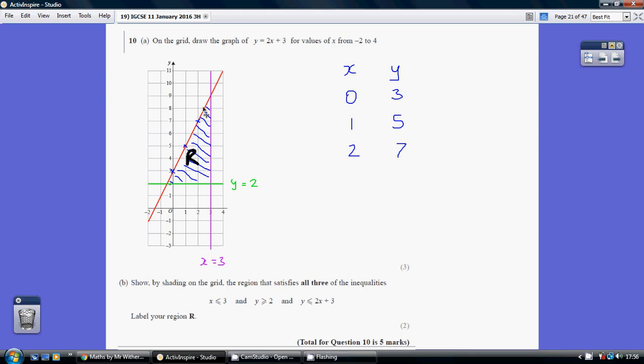And again, I would always do a third for luck. So I've popped in 2 to get 7. So the point 2, 7. Get out a ruler and draw in your straight line. The red line is your final answer for part A.